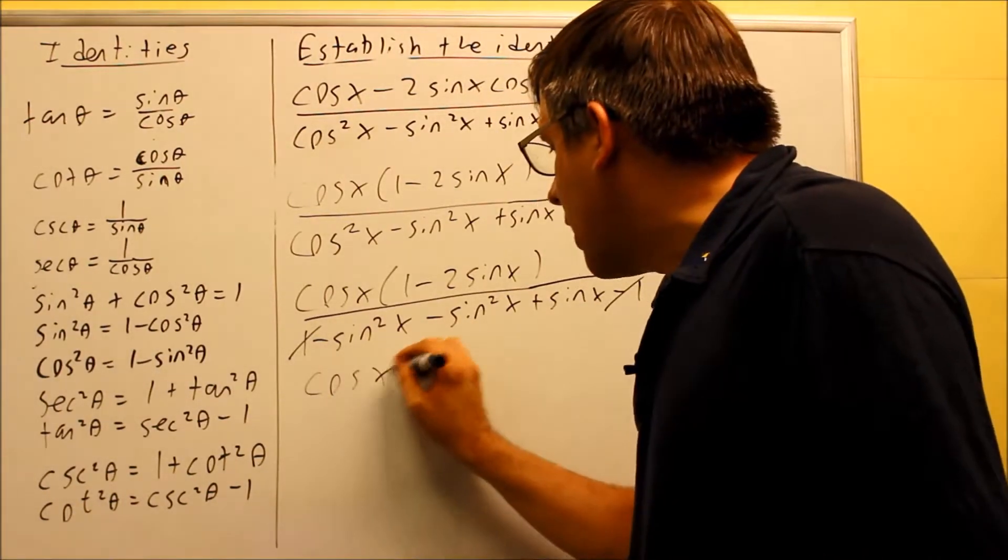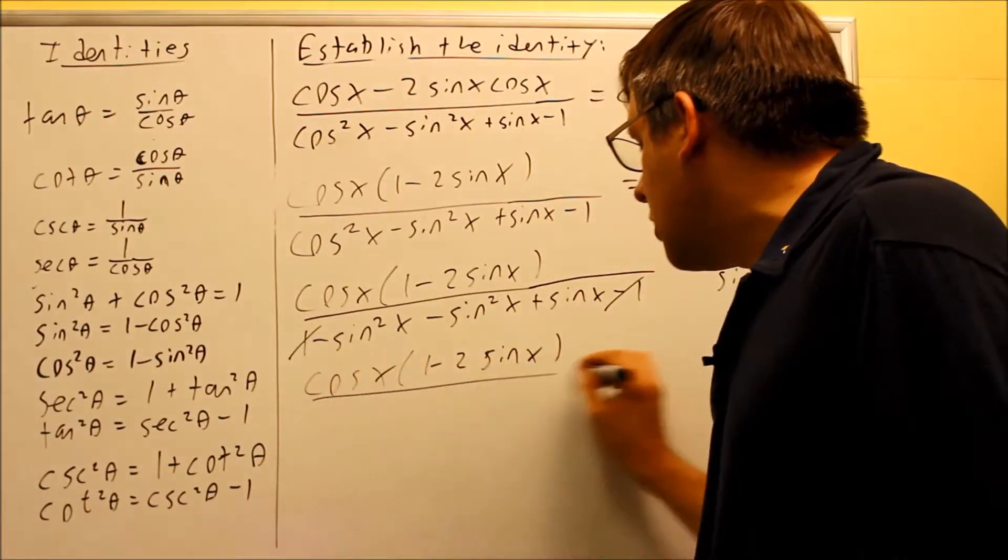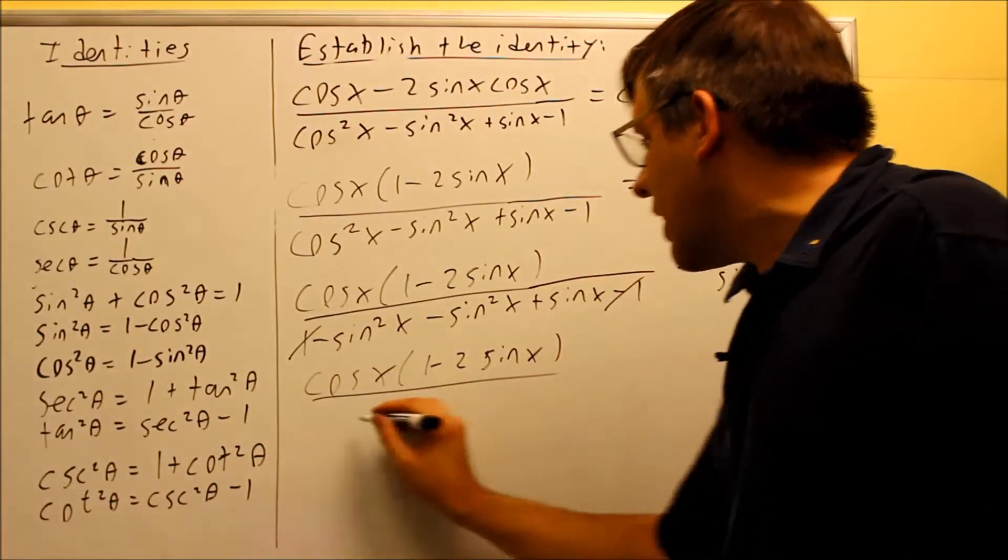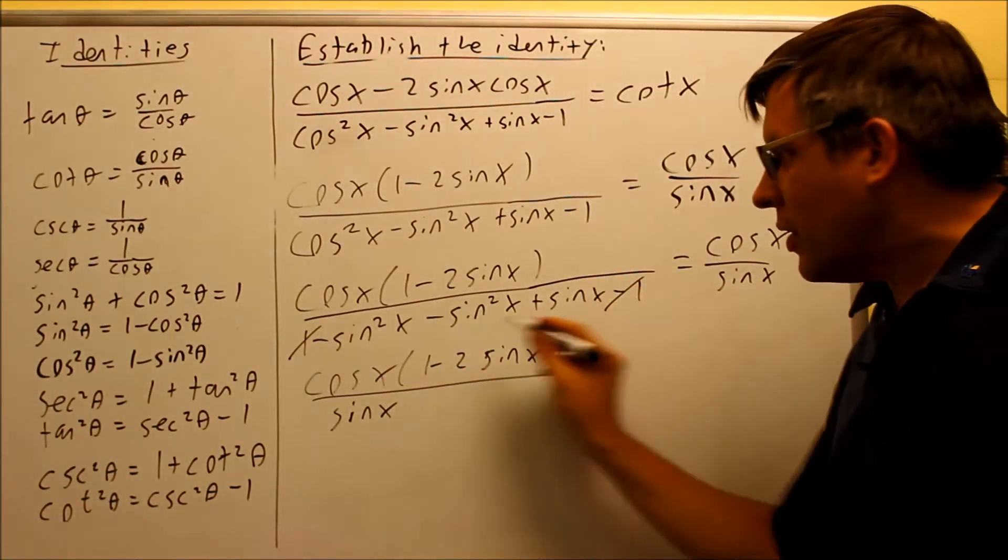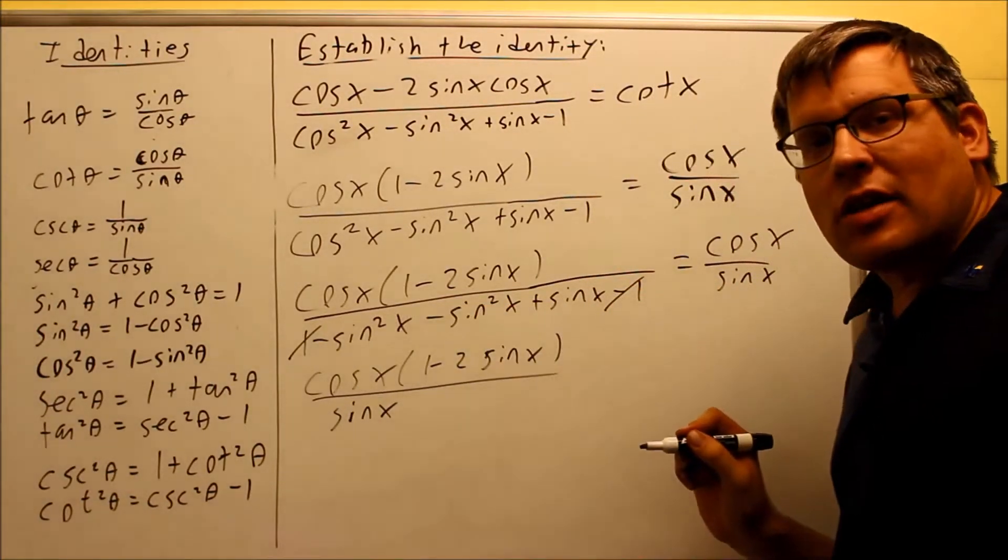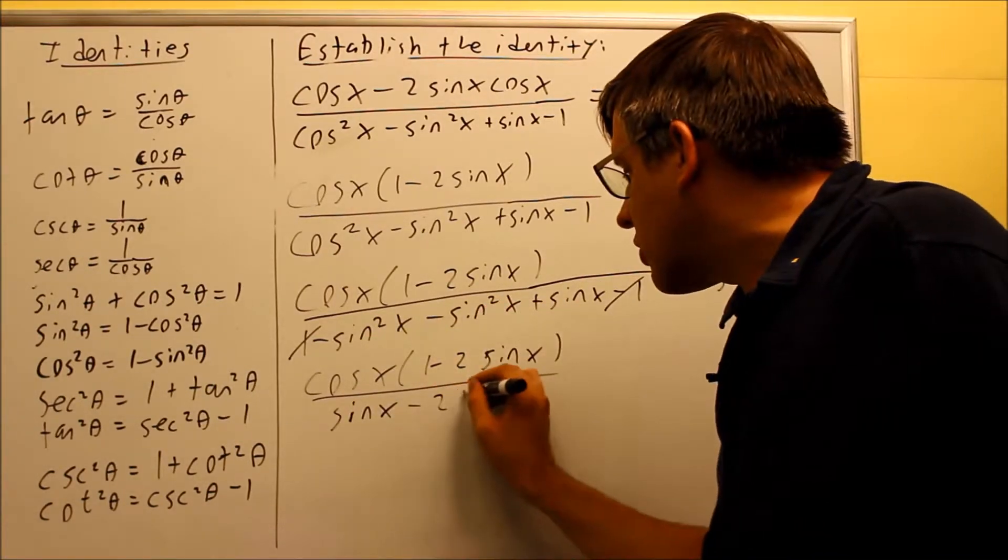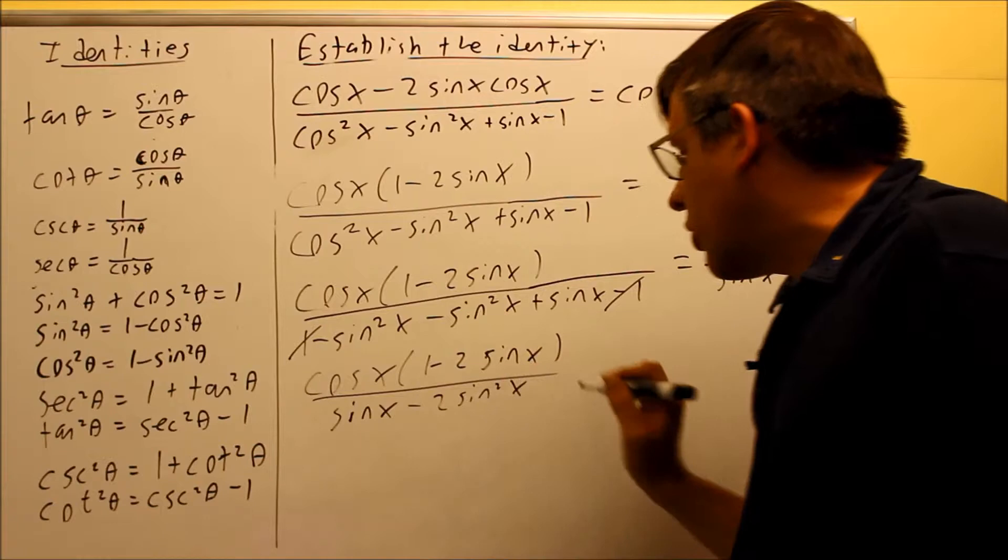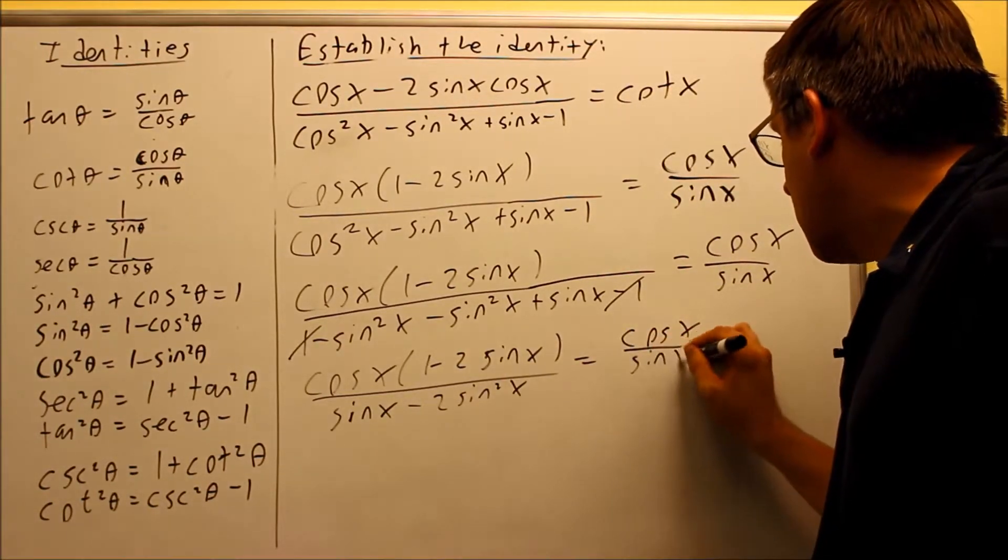So I'll have the top parts the same still. And then on the bottom, I have a sine x that I can't combine that together with anymore. That's by itself. But these two, I can combine that together. I have a minus one and a minus one there. That will give me a minus two sine squared x. And then I have cosine x over sine x over here.